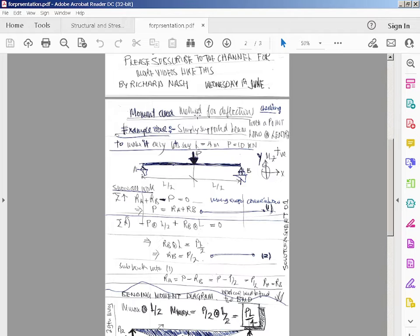Moment area method for deflection, example one: simply supported beam with a point load at the center. To make it easy, let's say L equals 4 and P equals 10 kilonewtons, but that's later on. Here I've done the sign convention: up is positive, left to right is positive X.